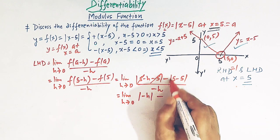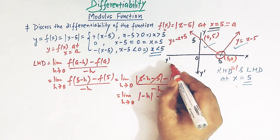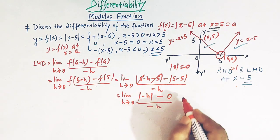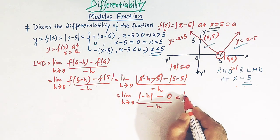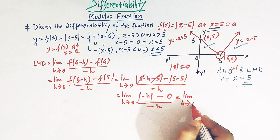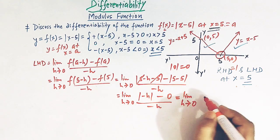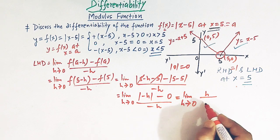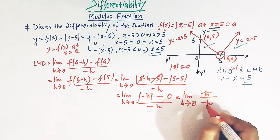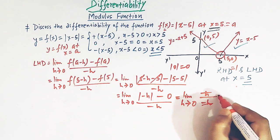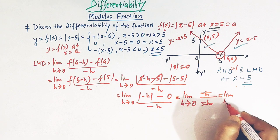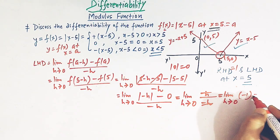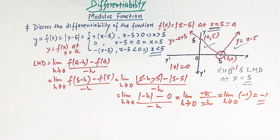And f(5) = |5-5| = 0, so we have [|-h| - 0] / (-h). Now |-h| = h, so this becomes h / (-h). The h's cancel and we are left with limit as h→0 of -1, which equals -1.